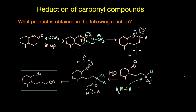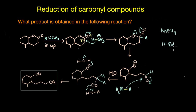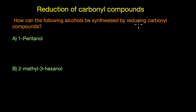The mechanism is quite similar for sodium borohydride reduction, where the electron pair from the H–B bond attacks the C=O group. Sodium borohydride gives a primary alcohol from an aldehyde and a secondary alcohol from a ketone.